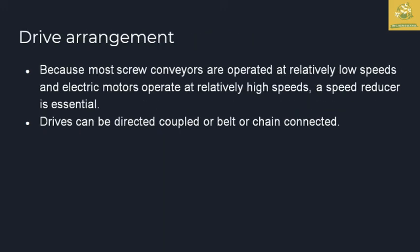The drive arrangement uses electrical motors at high speed for screw conveyors. There is a speed reducer — you can select the speed of the motor using a speed reducer. You can connect the drive using a coupling, belt, or chain.